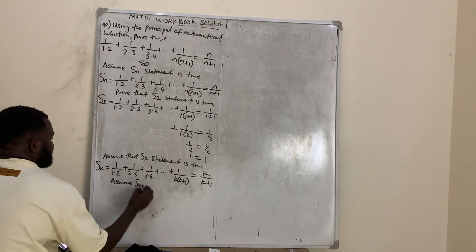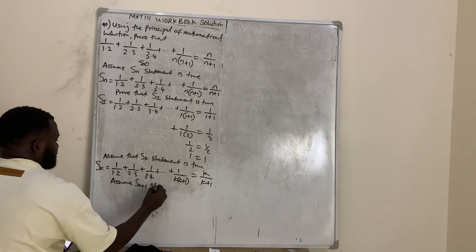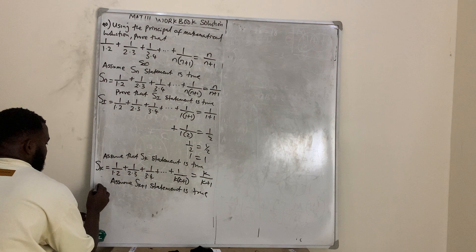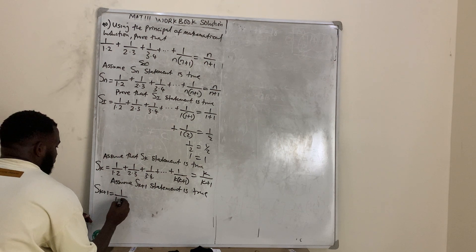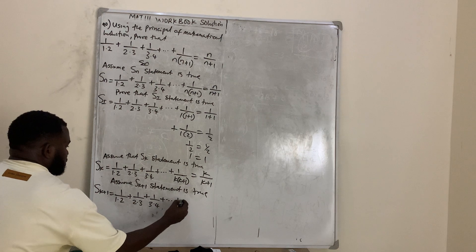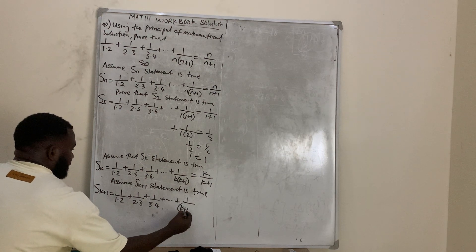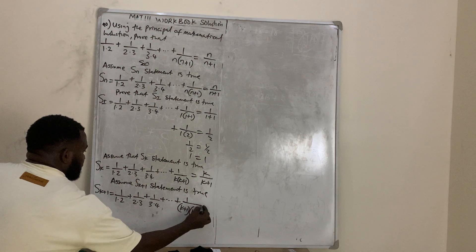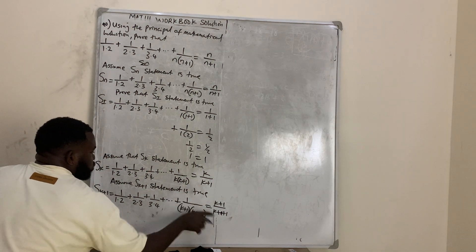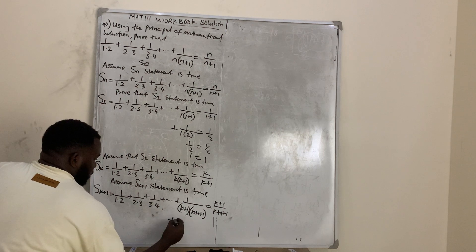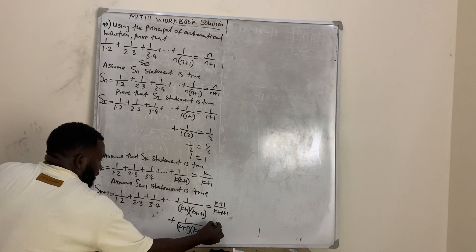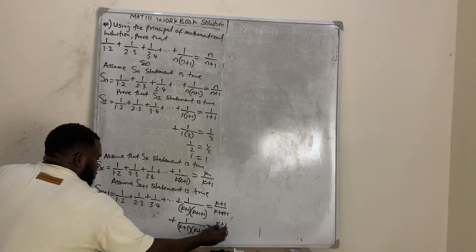Then assume that the Sk+1 statement is true. Substituting k+1 for k, the left-hand side becomes 1/(1·2) + 1/(2·3) + 1/(3·4) + ... + 1/((k+1)(k+2)), and the right-hand side is (k+1)/(k+2).